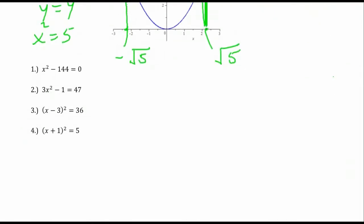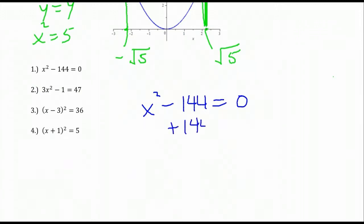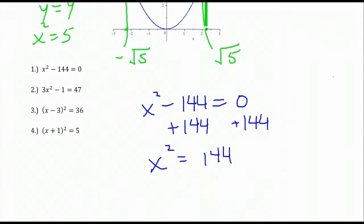Now let's apply the square root property algebraically to solve these equations. For the first one, we've got x squared minus 144 equals 0. Different than solving quadratic equations by factoring, you actually want to isolate the expression that's being squared. So we add 144 to each side, and now we're going to think about taking the square root of both sides, applying the square root property.